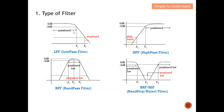Firstly, let's understand why this is called a low pass filter. From this diagram, you can see that all the low frequency components will be able to pass, while the high frequency falls under the stop band, which means they are not allowed to pass. Because all the low frequency passes and all the high frequency stops, this filter is called a low pass filter.